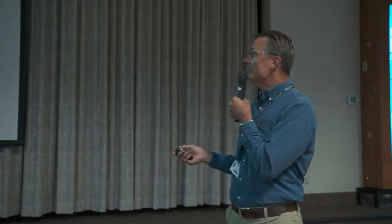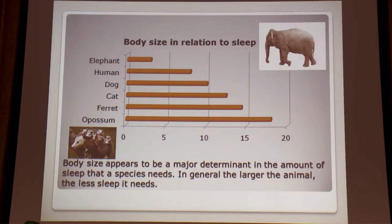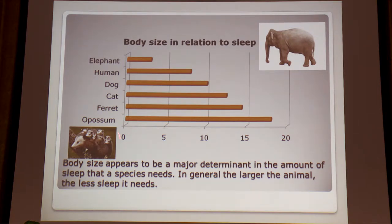Body size in relation to sleep: the bigger we are as an animal, the less sleep we appear to need. Elephants need three hours, humans around eight, and possums about 18. Body size appears to be the major determinant in the amount of sleep a species needs — in general, the larger the animal, the less sleep it needs.